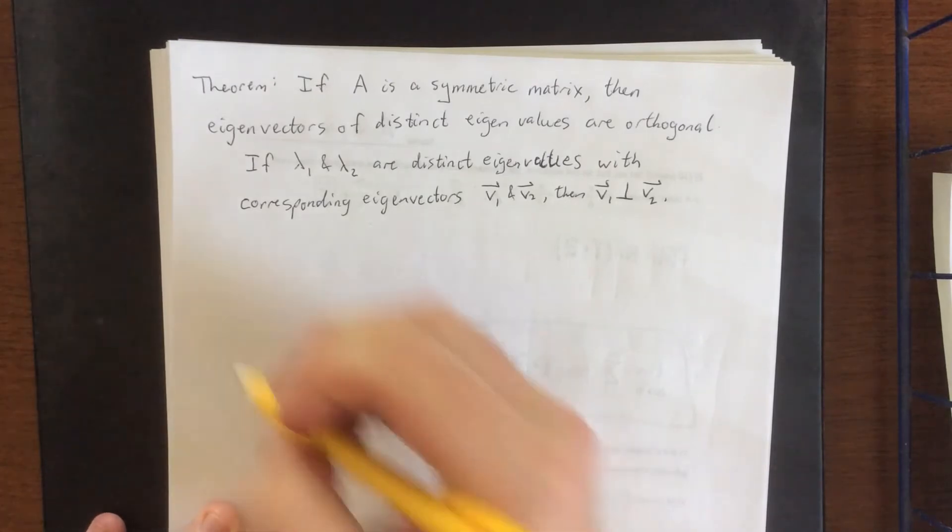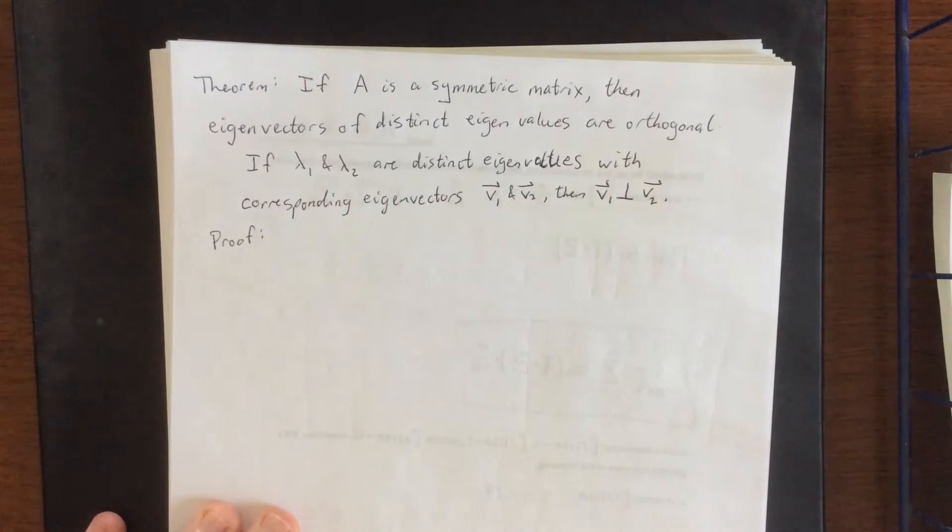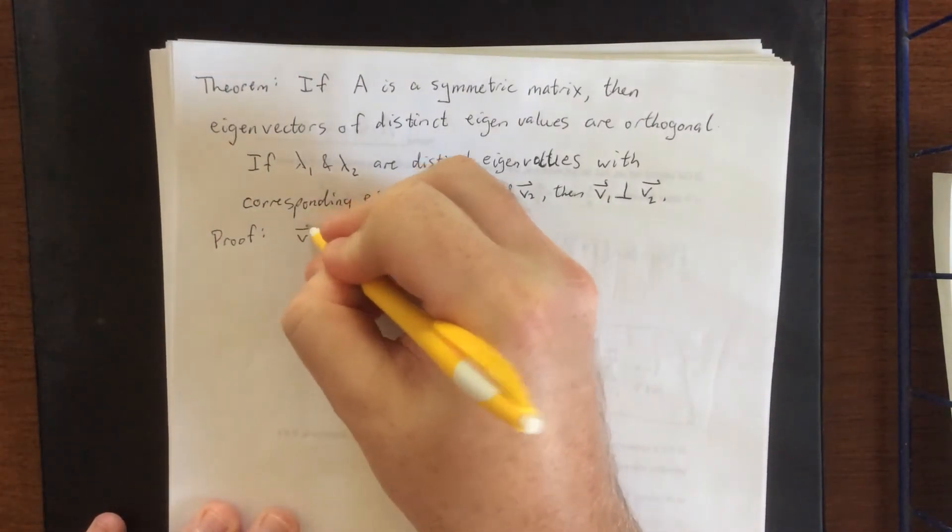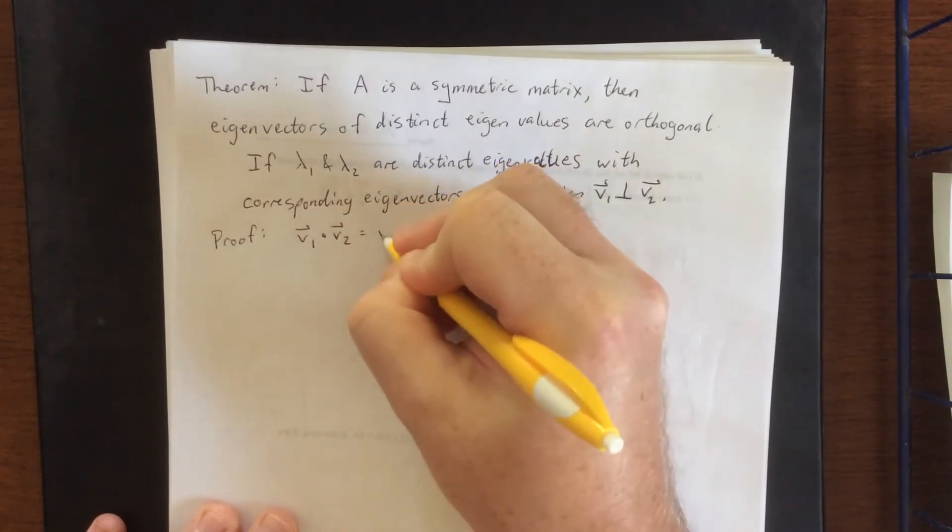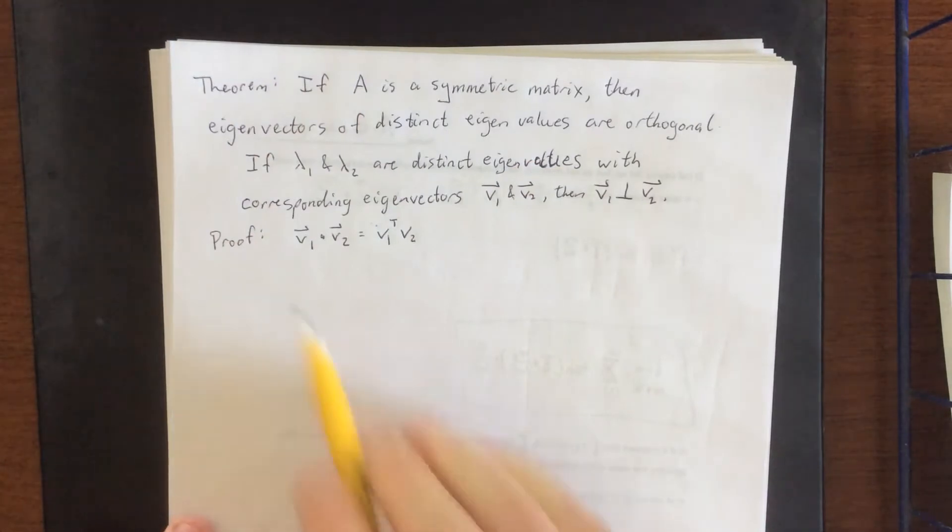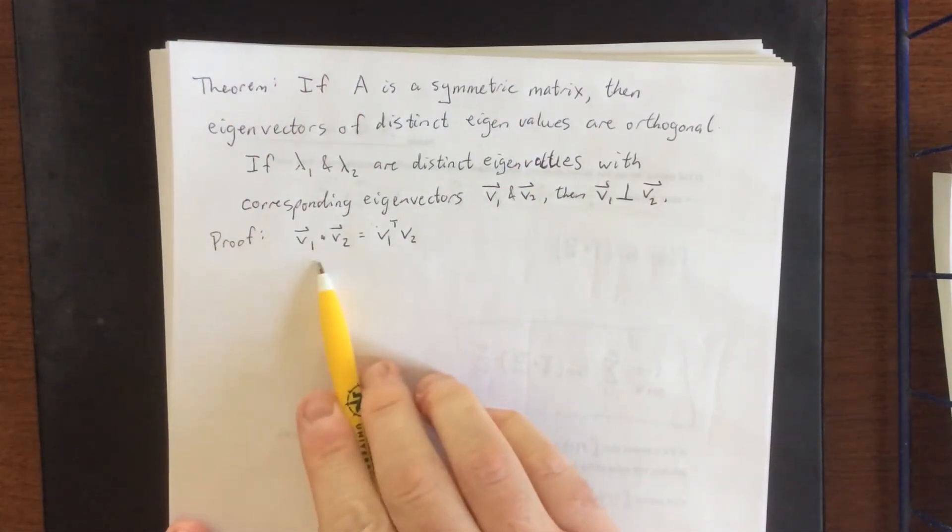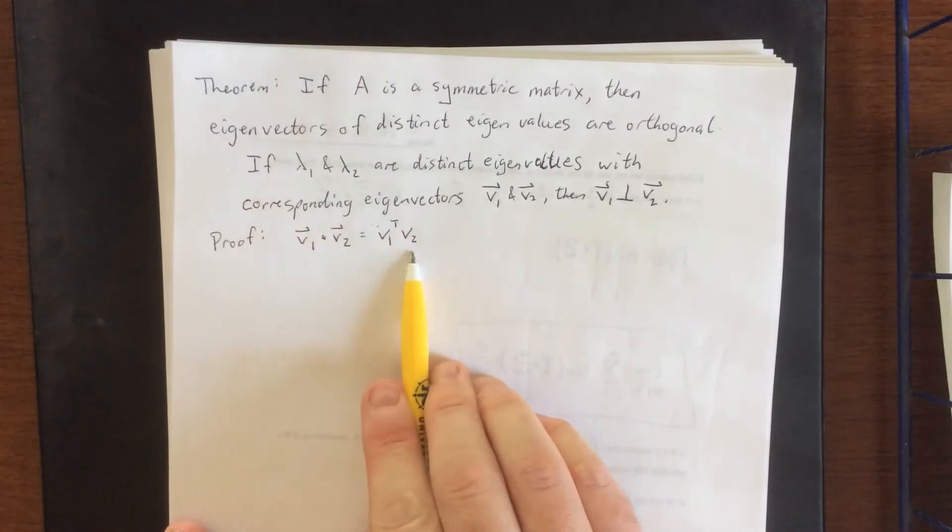Now we are going to run through the proof of this. The proof is going to make use of something that we talked about in the last video, which is that a dot product can correspond to a matrix multiplication. So these over here are column vectors, and these over here are a row matrix and a column matrix respectively.